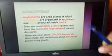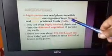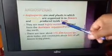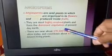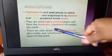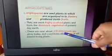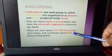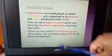Dear students, today's topic is Angiosperms. Angiosperms are selected seed plants in which spore fields are organized into flowers and seeds produced inside fruits. They are the most highly evolved plants and form the dominant vegetation of present-day earth. There are nearly 270,000 known species alive today, constituting about 80% of all known living plants.